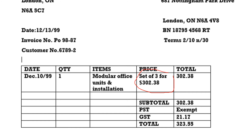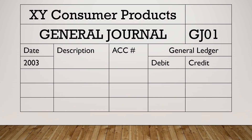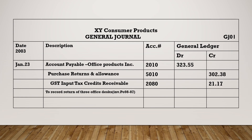Now this item is being returned, so where do you record it? You record it in the general journal because you cannot record it anywhere else — it's a purchase return, a different account from purchases. This is how the general journal will look: you have a date, a description, an account number, and columns for debit and credit. On January 23rd, you decide you are returning the item.